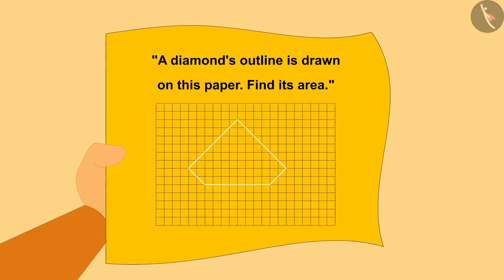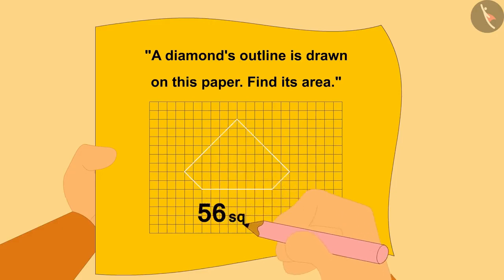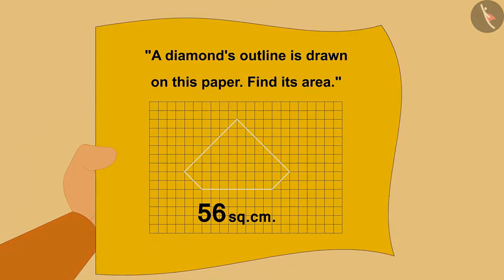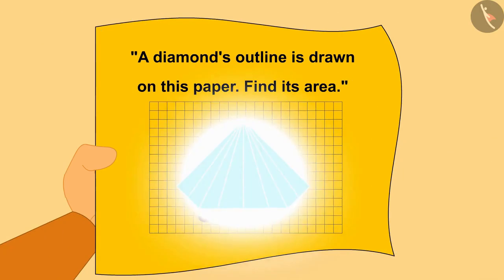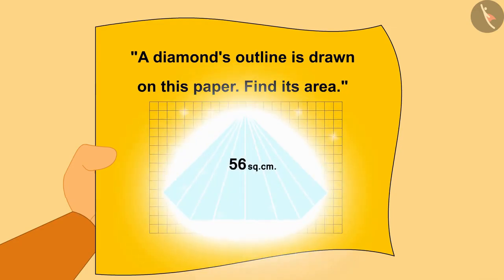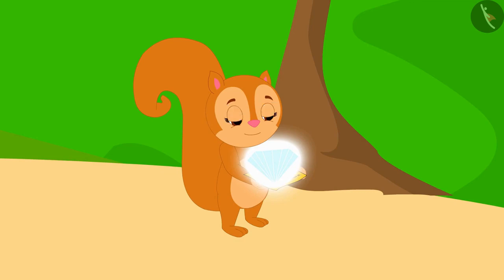Chanda immediately wrote the area of the diamond as 56 square centimeters on that paper. As soon as she wrote the area, a diamond of 56 square centimeters appeared in front of her. Chanda could not believe her eyes.